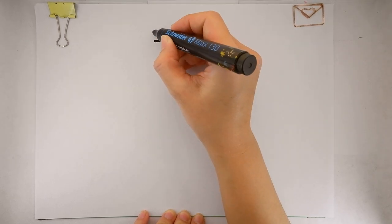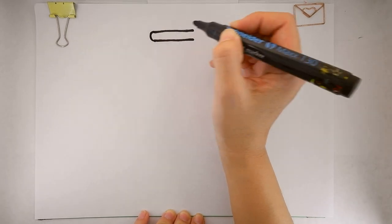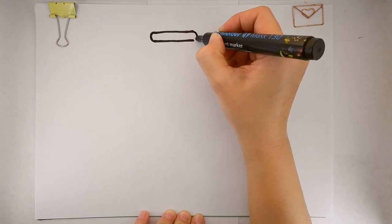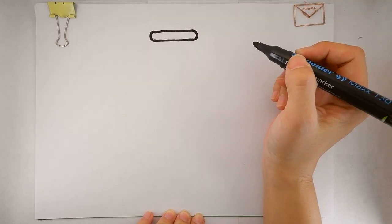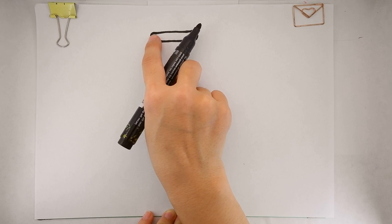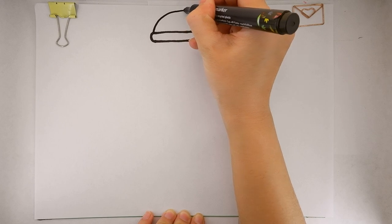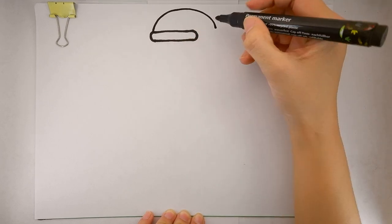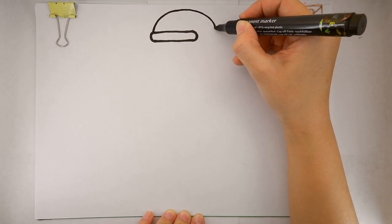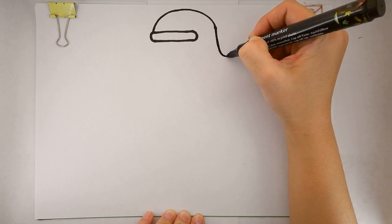Then let's connect them with curves on the left side and on the right side. Then I start over here and draw a big curve to the right. Then I go down and curve to the right.